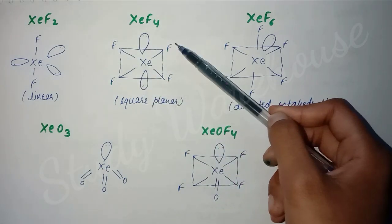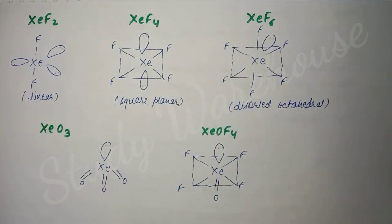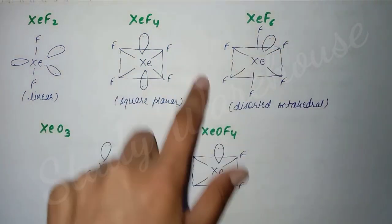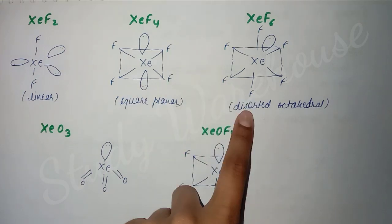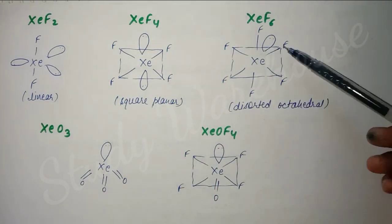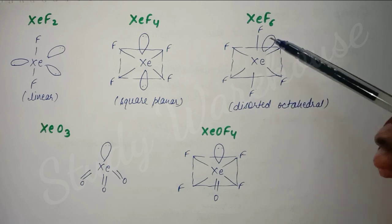If we talk about XeF4, here it bonded with four fluorine atoms, which means 4 electrons remain, so 2 pairs remain. We show these 2 pairs here. First this structure - we make it like this - square planar here. Now it's bonding with 6, so 1, 2, 3, 4, 5, 6 - it bonded with these many.